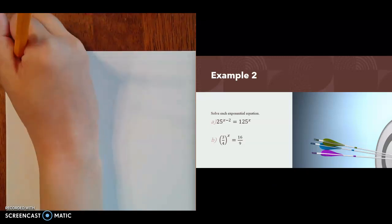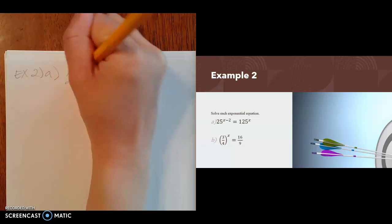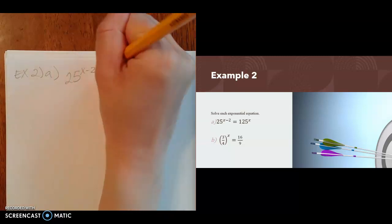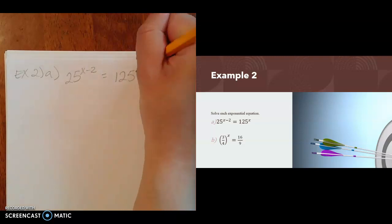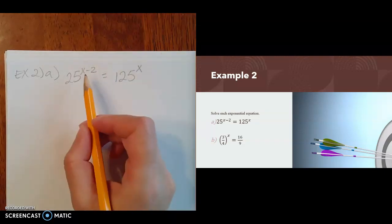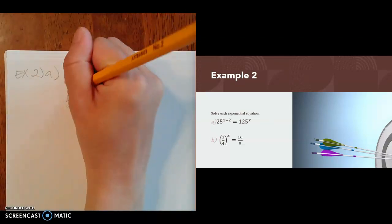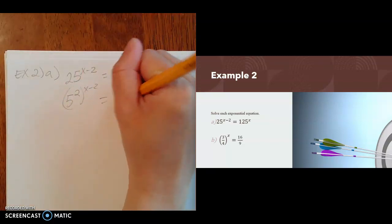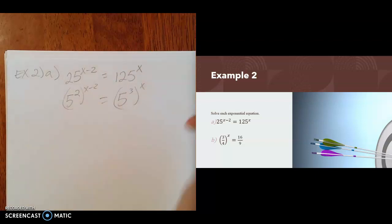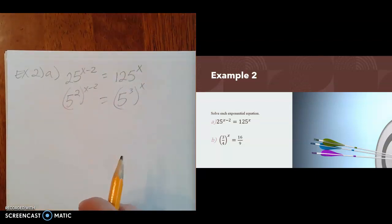So in example two, the first one we have is 25 raised to the x minus 2 equals 125 raised to the x. What I might notice with 25 and 125 is they're both powers of 5. 25 is 5 squared, 125 is 5 to the third power. So you can see how I'm writing it with the same base.